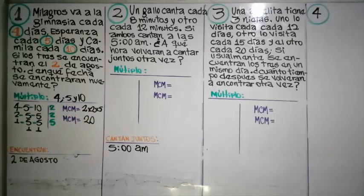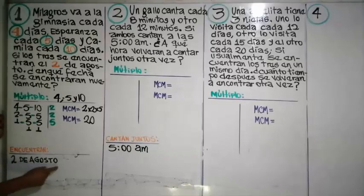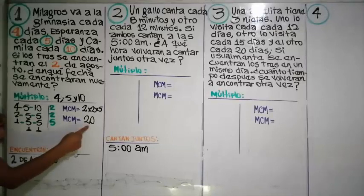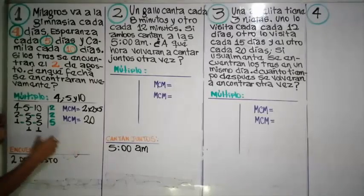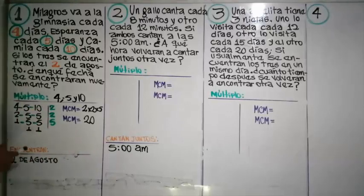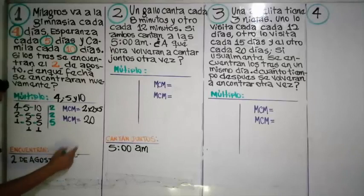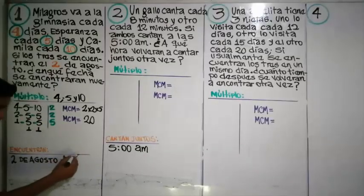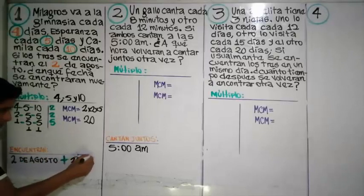Pero el problema dice que el dos de agosto se han encontrado. Más veinte días: el dos de agosto se han encontrado juntos, más veinte días.